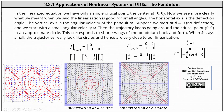Looking at the phase portraits below, on the left we have the phase portrait for the original system. Next we have the linearization at the point zero comma zero where we have a stable center, and then on the right we have the linearization at the saddle point pi comma zero. In the linearized equation, we have only a single critical point, the center at zero comma zero. Now we see more clearly what we meant when we said the linearization is good for small angles. The horizontal axis is the deflection angle and the vertical axis is the angular velocity of the pendulum.